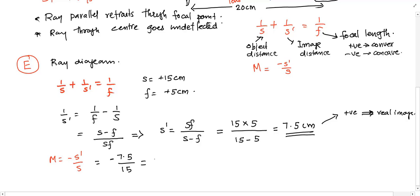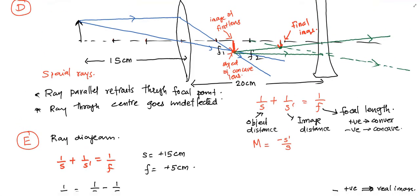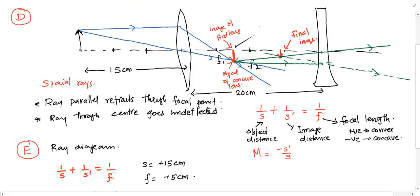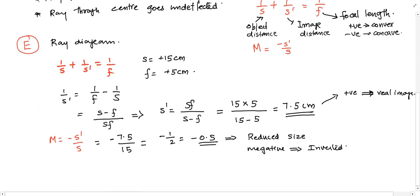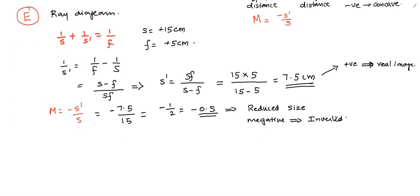The magnification can be evaluated using m = -s'/s which equals -7.5/15. The negative means the image is inverted and the magnification of 0.5 means the size is reduced to half. These are actually true according to our diagram.